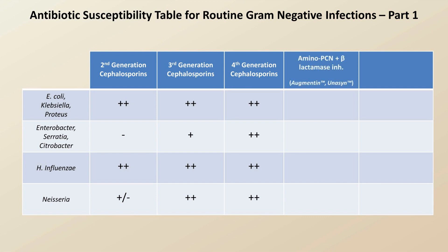Combinations of aminopenicillins and beta-lactamase inhibitors, as in Augmentin and Unasyn, have excellent coverage of everything listed but the Enterobacter, Serratia, Citrobacter group. And the anti-pseudomonal penicillin-beta-lactamase inhibitor combo, Zosyn, has great coverage of routine gram-negatives that is equal or near equal to cefepime.